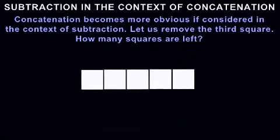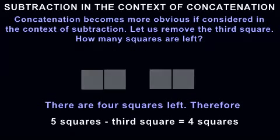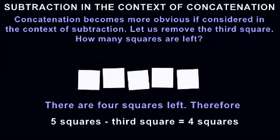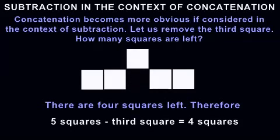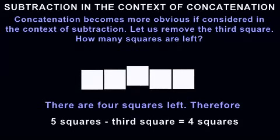Concatenation becomes more obvious if considered in the context of subtraction. Let us remove the third square. How many squares are left? There are four squares left. Therefore, five squares minus the third square equals four squares.